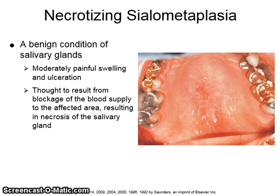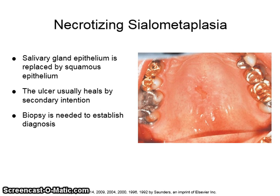Necrotizing sialometaplasia is a benign condition of salivary glands. It can result in moderately painful swelling and ulceration. It is thought to result from blockage of the blood supply to the affected area, resulting in necrosis of the salivary gland. Salivary gland epithelium is replaced by squamous epithelium. The ulcer usually heals by secondary intention, and biopsy is needed to establish an accurate diagnosis.